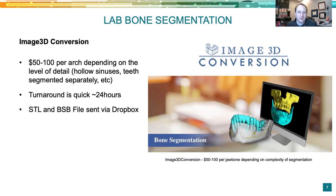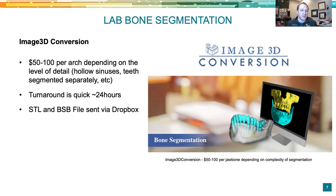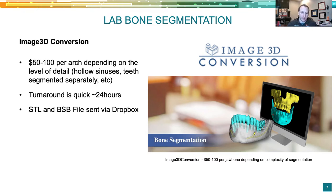You could send it to a lab — one I've used for years with great success. Usually 24 to 48 hours later, I get the segmented models. The lab uses Blue Sky Bio to do it, so you're just paying someone else's time. It's a little more expensive — 50 to 100 bucks. They'll send you the Blue Sky plan file and the STLs via Dropbox, and invoice through PayPal. We've used them for a couple of years doing our sinus course, printing the hollow maxilla so surgeons can see inside the sinus.